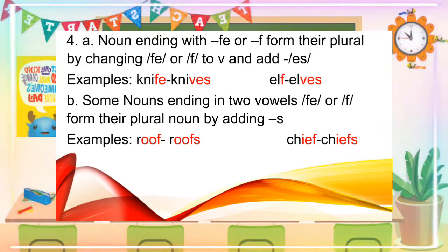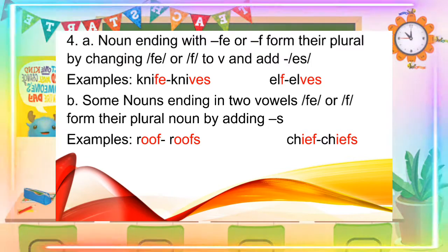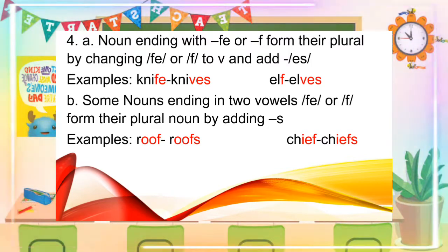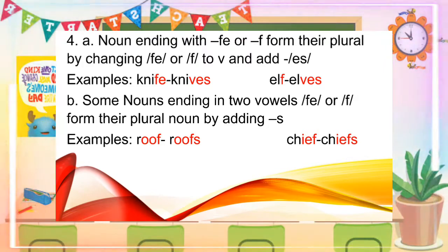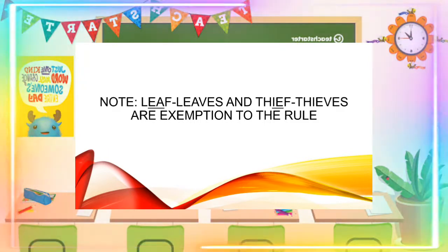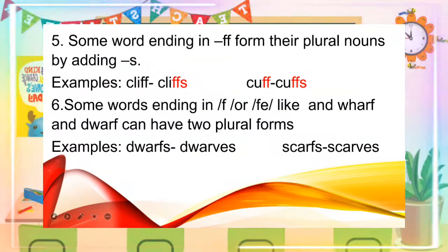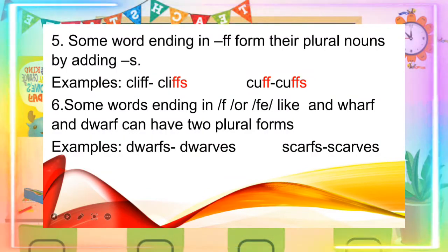Rule number four: a noun ending with FE or F forms its plural by changing FE or F to V and adding ES. Examples: knife, knives; elf, elves. Some nouns ending in two vowels followed by F or FE form their plural by adding S. For example: roof, roofs; chief, chiefs. Note that leaf, leaves, and thief, thieves are exceptions to this rule. Rule number five: some words ending in FF form their plural by adding S. For example: cliff, cliffs; cough, coughs.